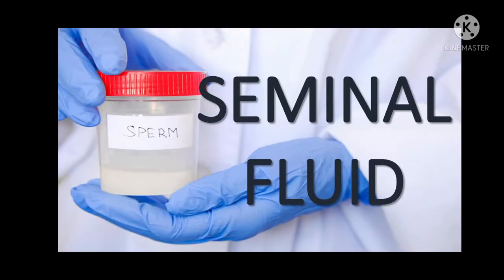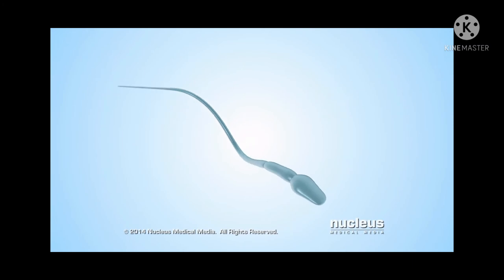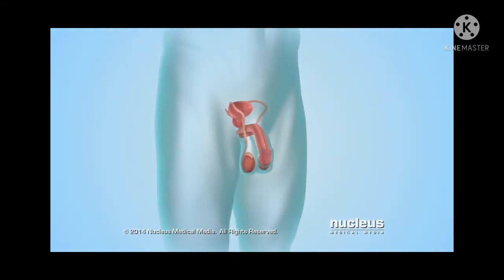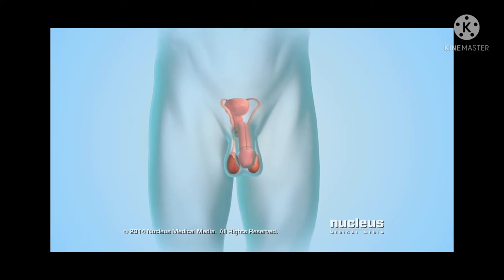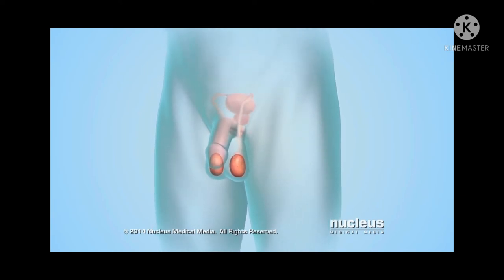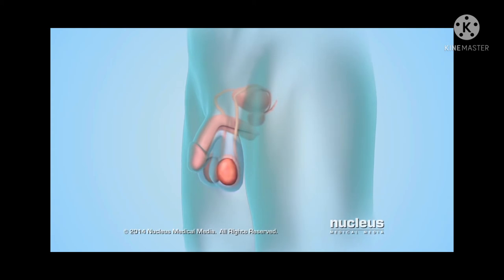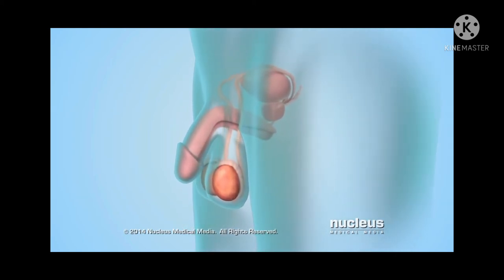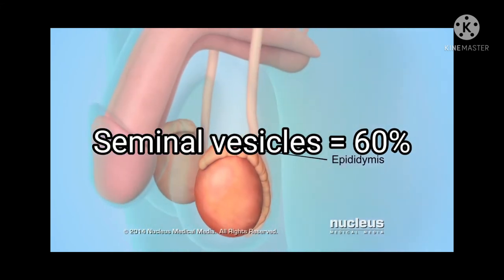Another body fluid from males is seminal fluid. Seminal fluid, also called semen, is a fluid emitted from the male reproductive tract that contains sperm cells capable of fertilizing the female's eggs. Semen also contains liquids that combine to form seminal plasma, which helps keep the sperm cells viable. The only mode of collection for seminal fluid is through masturbation. During ejaculation, liquids from the prostate gland and seminal vesicles are added, which dilute the sperm concentration and provide a suitable environment.